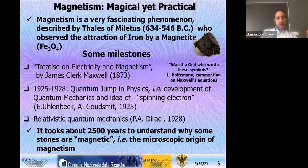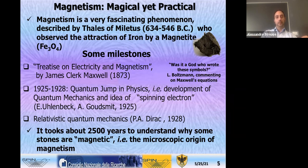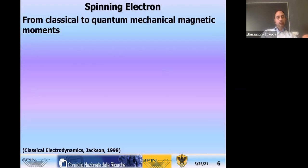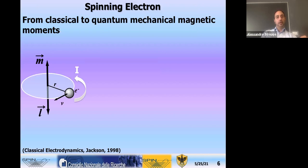Magnetism — magical yet practical. The first report was given by Thales of Miletus, reporting the attraction of iron by magnetite. It took about 2,500 years to understand the microscopic origin of these phenomena. An important milestone is the treatise on electricity and magnetism by James Clerk Maxwell — a very elegant and beautiful mathematical theory about the combination of electricity and magnetism.